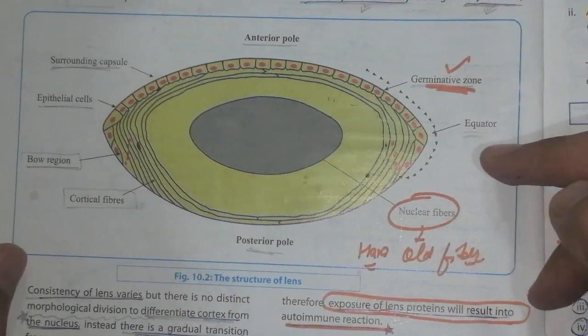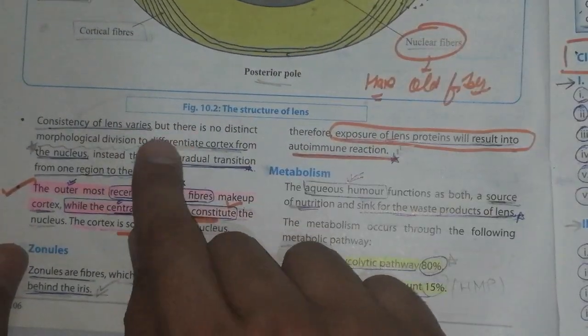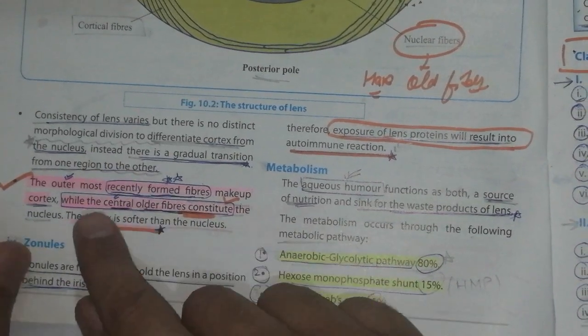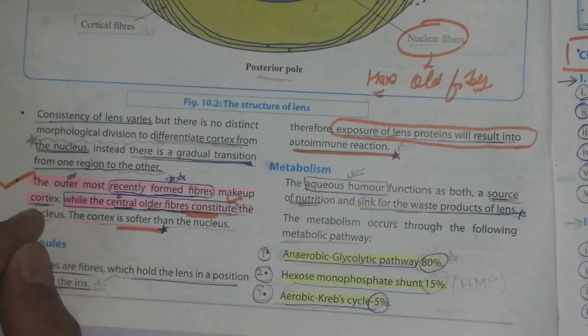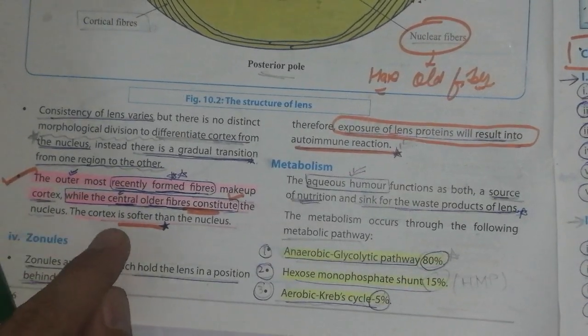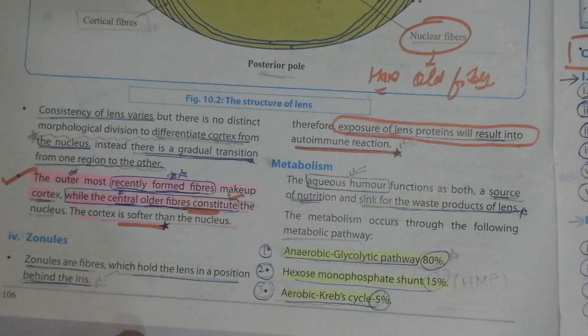Consistency of the lens varies, but there is no distinct morphological division. The outer most recently formed fibers make up the cortex, while the central older fibers constitute the nucleus. Cortex is softer than the nucleus. The zonules are the fibers which hold the lens in position behind the iris.